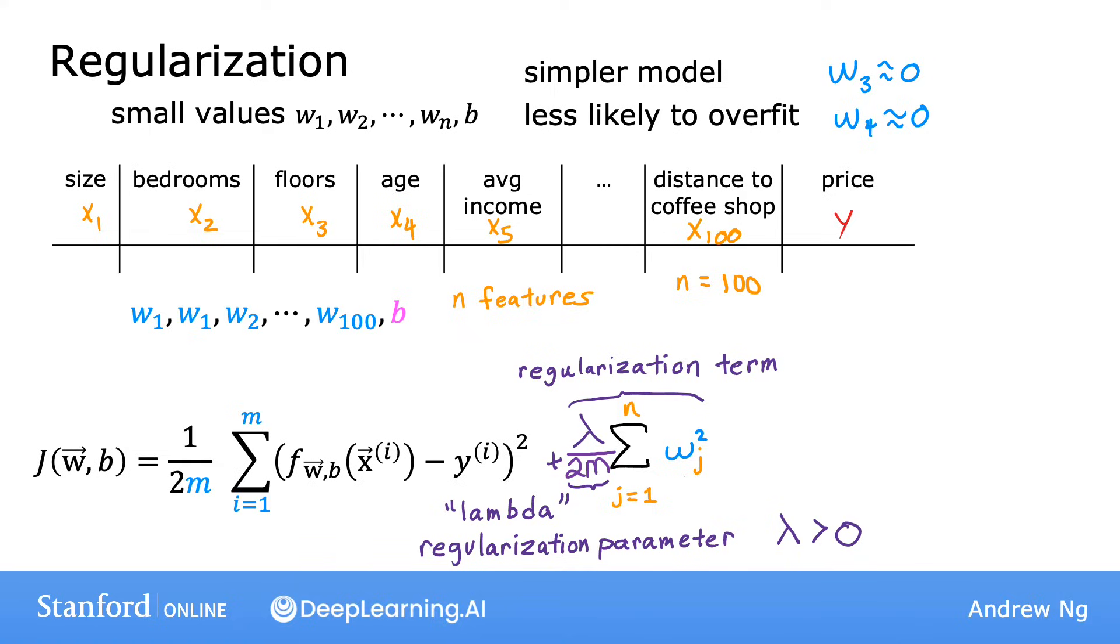Also by the way, by convention, we're not going to penalize the parameter b for being large. In practice, it makes very little difference whether you do or not. And some machine learning engineers and actually some learning algorithm implementations will also include lambda over 2m times the b squared term. But this makes very little difference in practice, and the more common convention which we'll use in this course is to regularize only the parameters w rather than the parameter b.